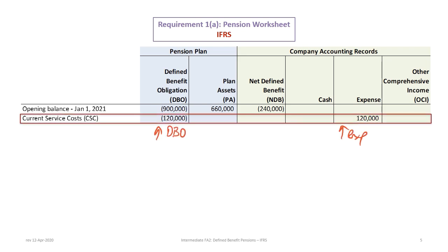The next item to deal with is current service costs. The current service costs from the data are $120,000, and they have the effect of increasing the DBO. So we're going to add a negative $120,000 — a credit — to the DBO for $120,000 and debit the expense. The current service costs increase the current period expense.